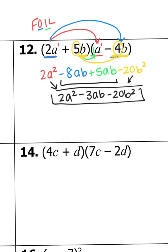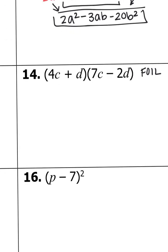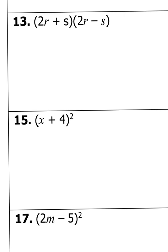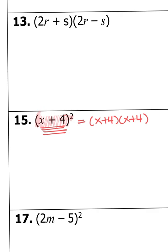I'd like you to try number 14 on your own — if it helps, write down FOIL to follow along. Now I'm going to do number 15. This is really important — when you see a binomial raised to the second power, this truly means you write it out twice and multiply. So X plus 4 squared means X plus 4 times X plus 4. It does not mean to distribute the exponent — that is wrong. You write X plus 4 twice and multiply.